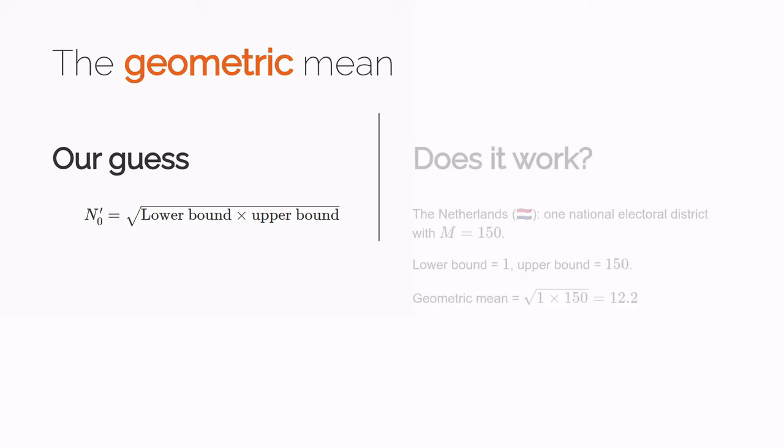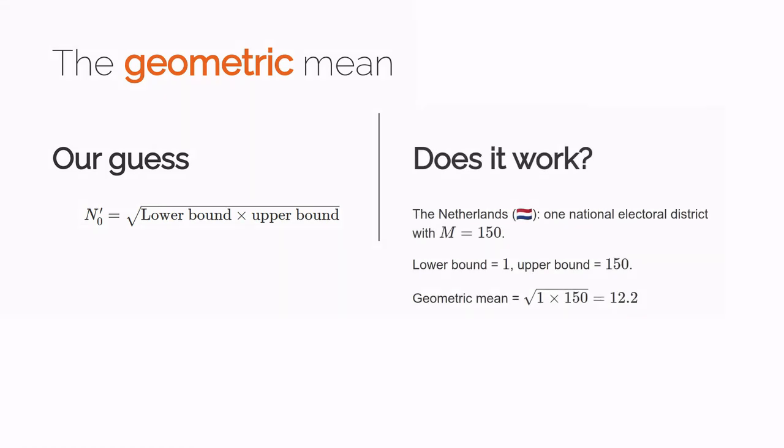We go back to our Dutch example. The lower bound is still one, the upper bound is still 150, but the square root of the product of these numbers is now around 12, a much more realistic number. Indeed, if we compare it to the number of seat winning parties in the last three elections, we can see it's a fairly decent guess.